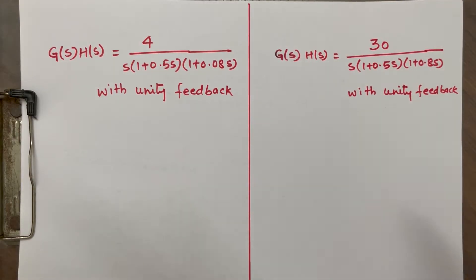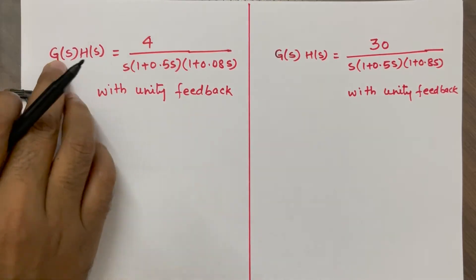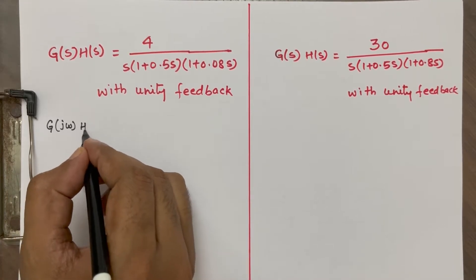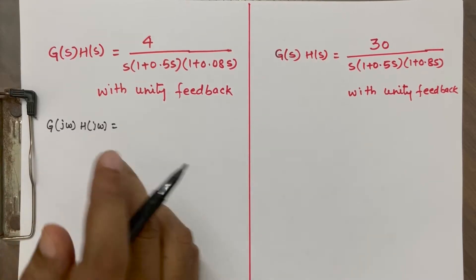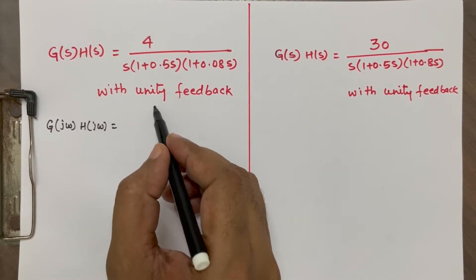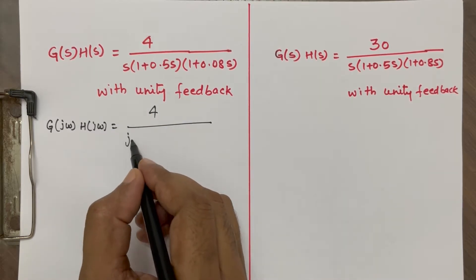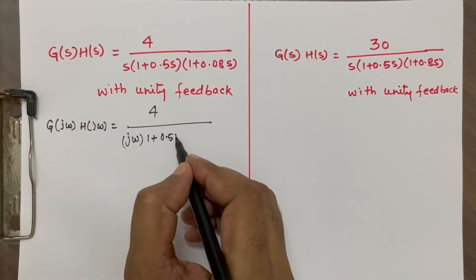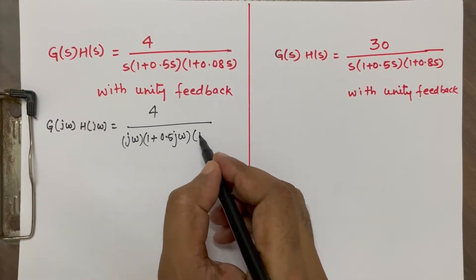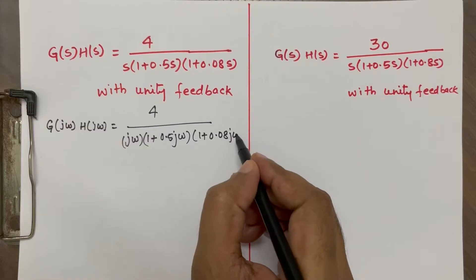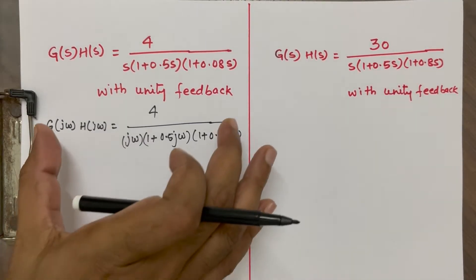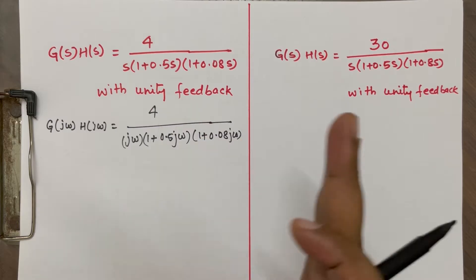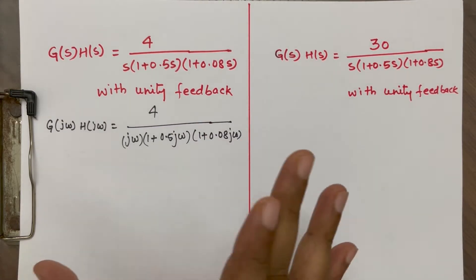So first of all, this function is in the S domain. We are going to write it in terms of jω, so it will become G(jω) — the open loop transfer function — equal to 4 divided by jω, then multiplied by (1 + 0.5jω) and (1 + 0.08jω). We will finish this problem first, then go to the next one and see how it goes from stable to unstable or from unstable to stable by knowing the gain margin and phase margin.